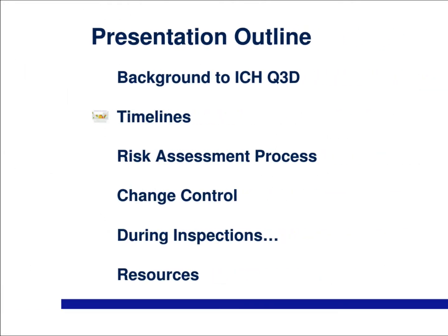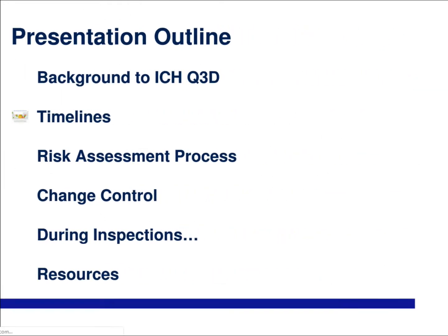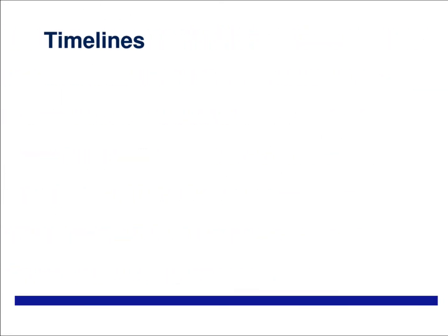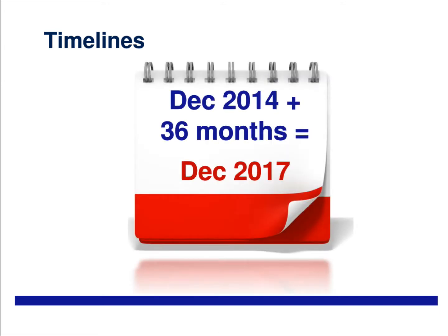The timelines are as follows. The document was issued in December 2014 and was initially to be applied to new products being developed. There was however a requirement for this to be applied to existing drug products from 36 months after publication, which meant it came into effect from December 2017, and that's why we're looking at it now.